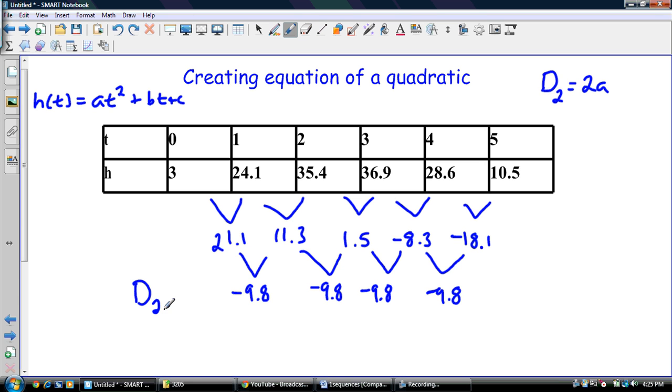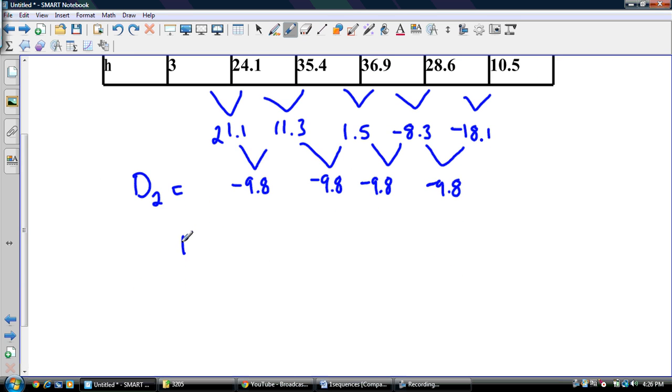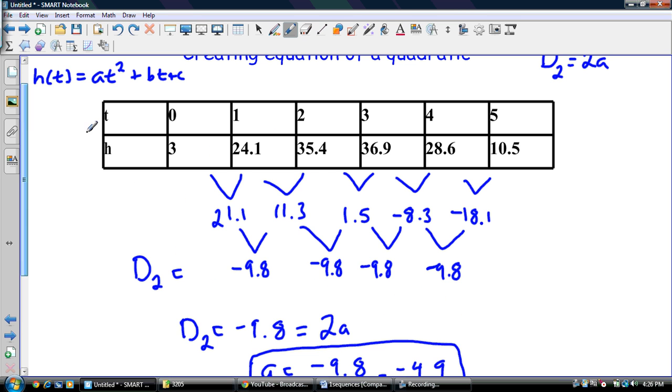All right. So this is our D2. It's equal to negative 9.8. So we're going to use this fact. D2 is equal to 2A. D2 is equal to negative 9.8, which is equal to 2A. Or A is equal to negative 9.8 divided by 2. And we get negative 4.9. So that's my A value. So that's really the first important step in this. So A is equal to negative 4.9, right here.